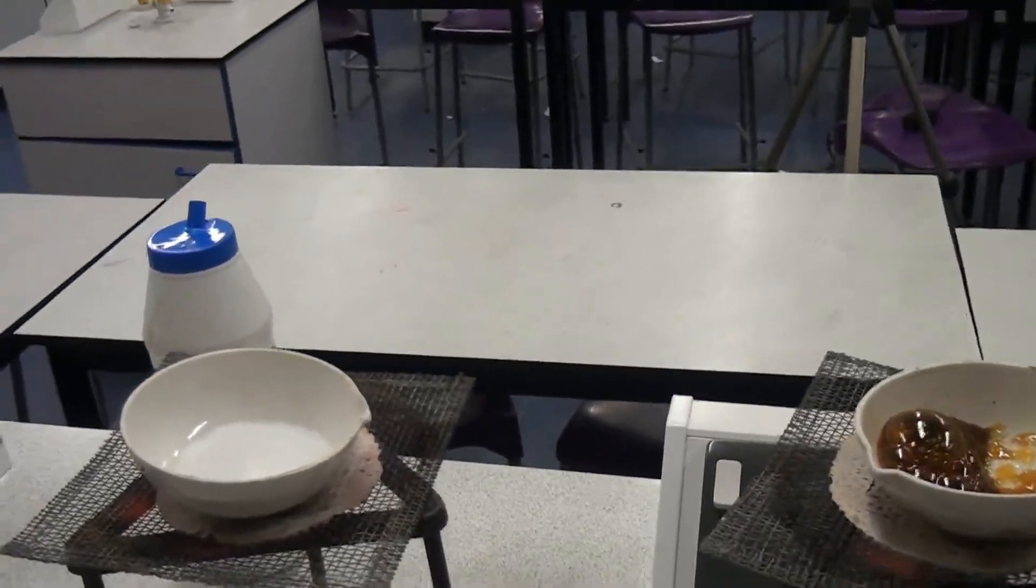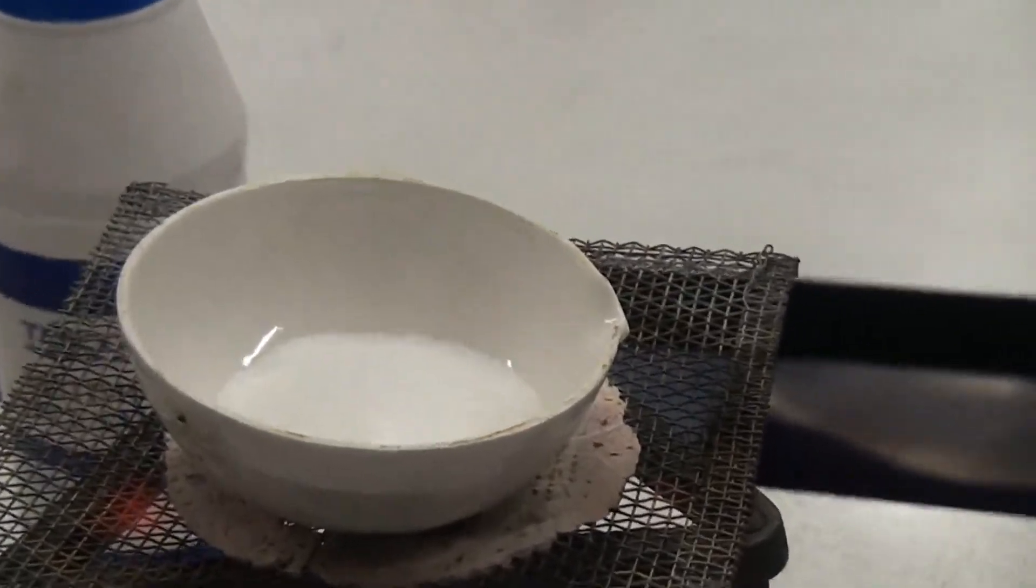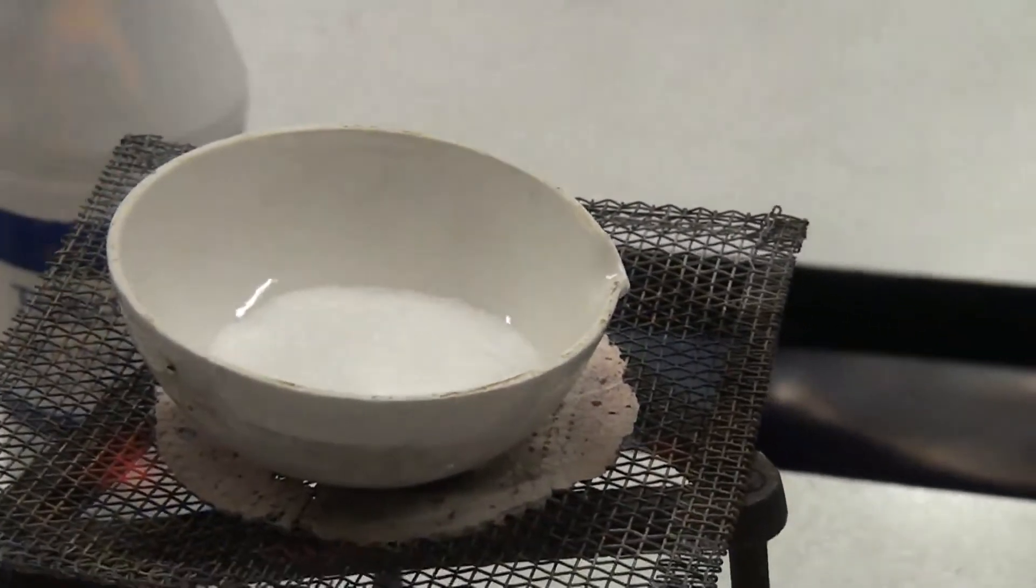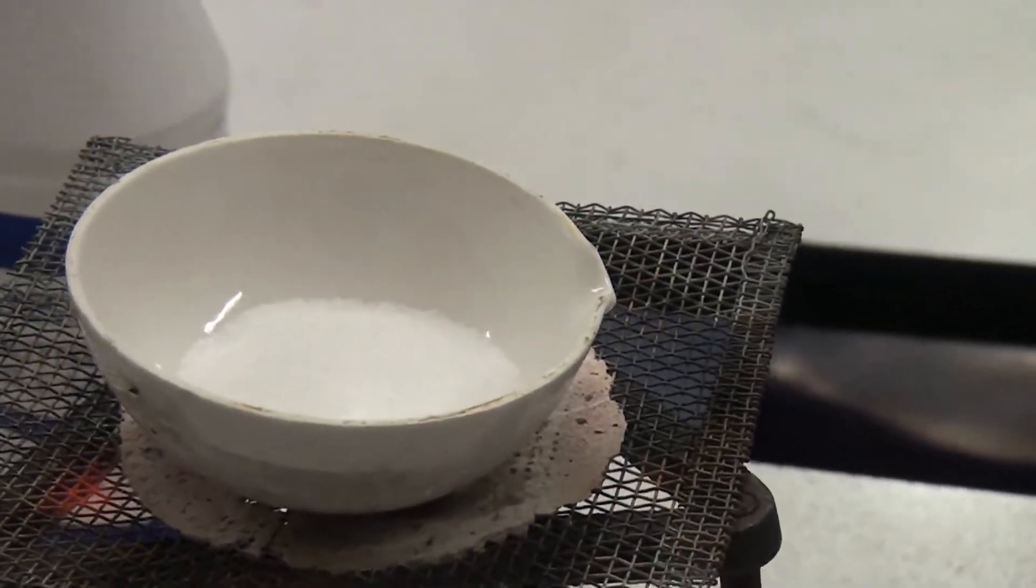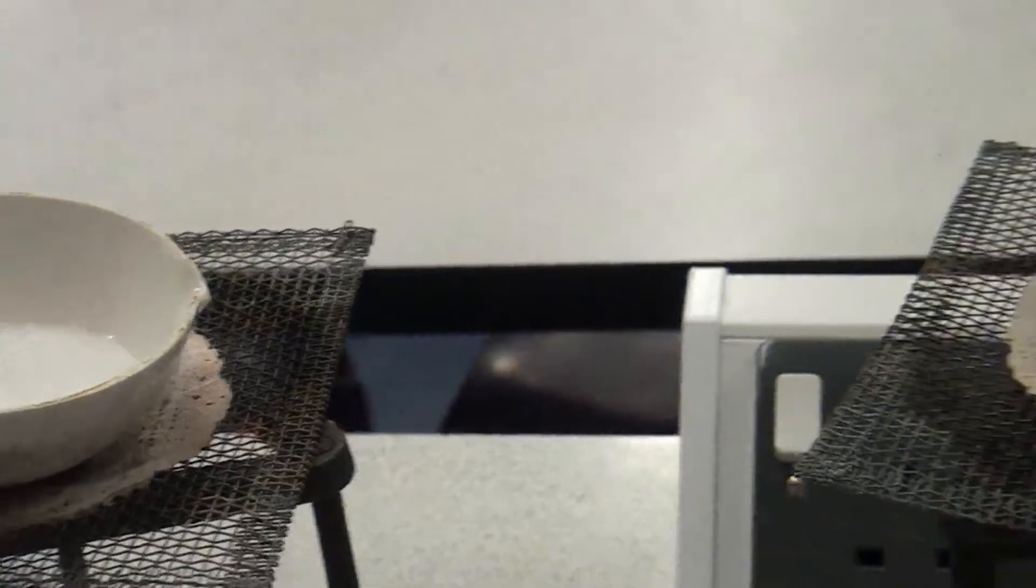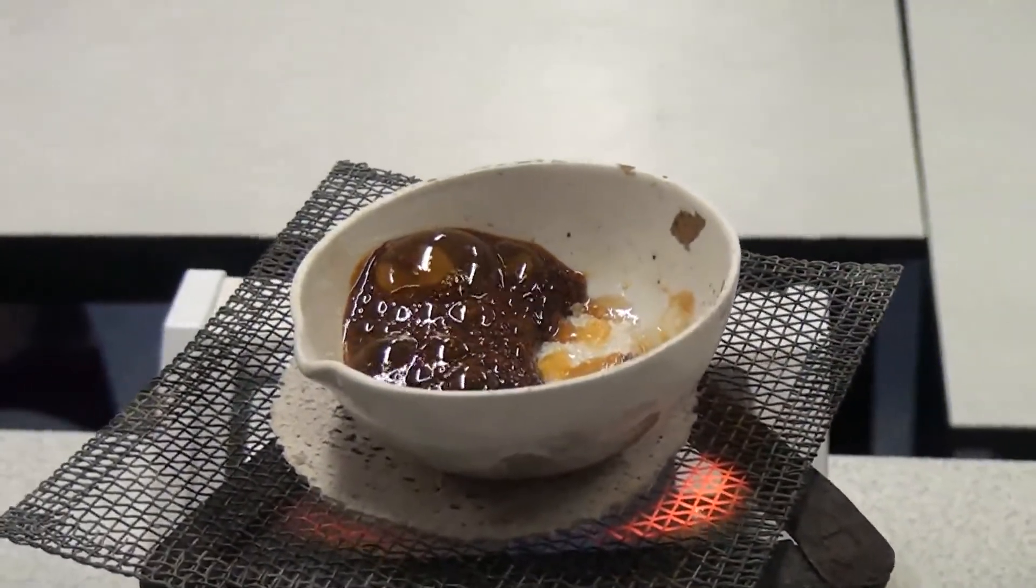So a few minutes in, we can see that the salt is unaffected because it's got a very high melting point. It's an ionic compound. So we could leave that on there all day and it's still not going to melt. The sugar, although it looks very similar to salt, is melting quite easily just after a few minutes.